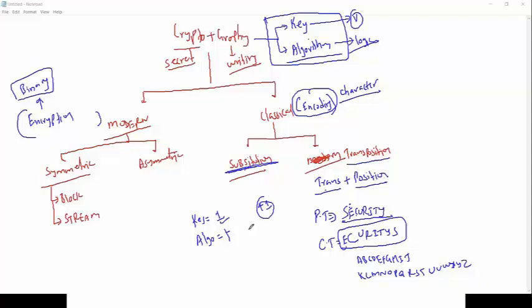Now substitution: if I use substitution, we have 'SECURITY'. S plus 1 is T, E plus 1 is F, C plus 1 is D, U plus 1 is V, R plus 1 is S, I plus 1 is J, T plus 1 is U, Y plus 1 is Z. So my ciphertext is T-F-D-V-S-J-U-Z.